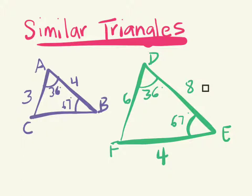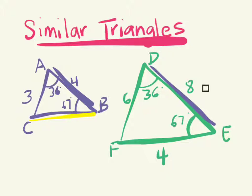If you look at side AB and you compare it to side DE, what do you notice happened here? It got doubled. So can you figure out the missing side length of CB? DE is doubled. You know that this is going to be two units for this side.